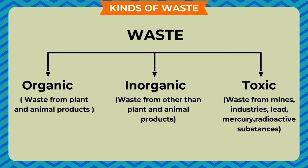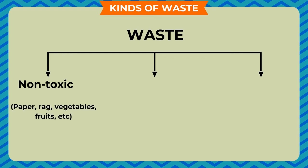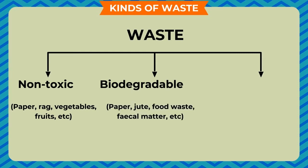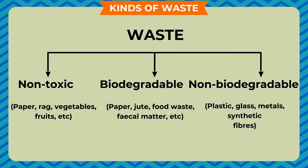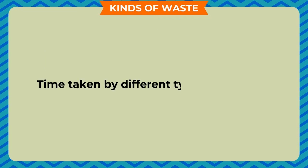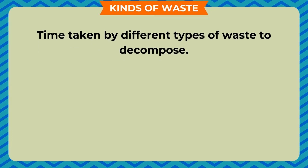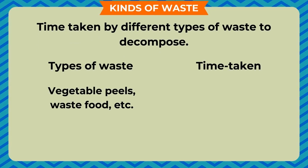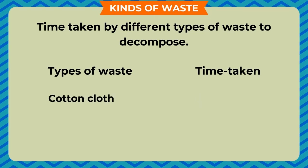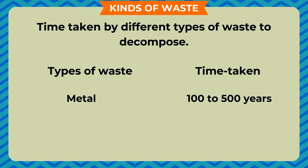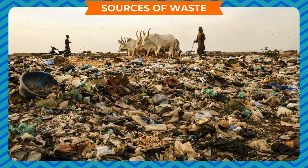Waste is also classified as non-toxic (paper, rags, vegetables, fruits, etc.), biodegradable (paper, jute, food waste, faecal matter, etc.), and non-biodegradable (plastic, glass, metals, synthetic fibers). The time taken by different types of waste to decompose varies: vegetable peels and food waste take 1–2 weeks; paper 10–30 days; cotton cloth 2–5 months; wood 10–15 years; metal 100–500 years; and plastic takes millions of years.